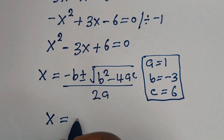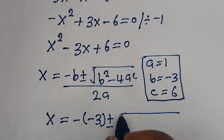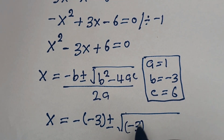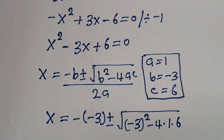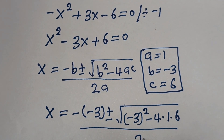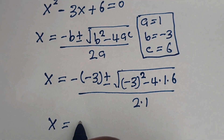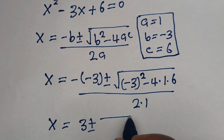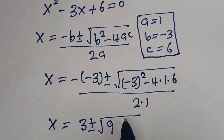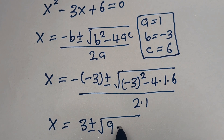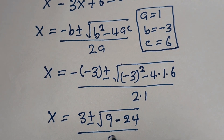S is equal to minus(minus 3) plus or minus square root of (minus 3) squared minus 4 multiplied by 1 multiplied by 6, all over 2 multiplied by 1. That gives us 3 plus or minus square root of 9 minus 24, all over 2.